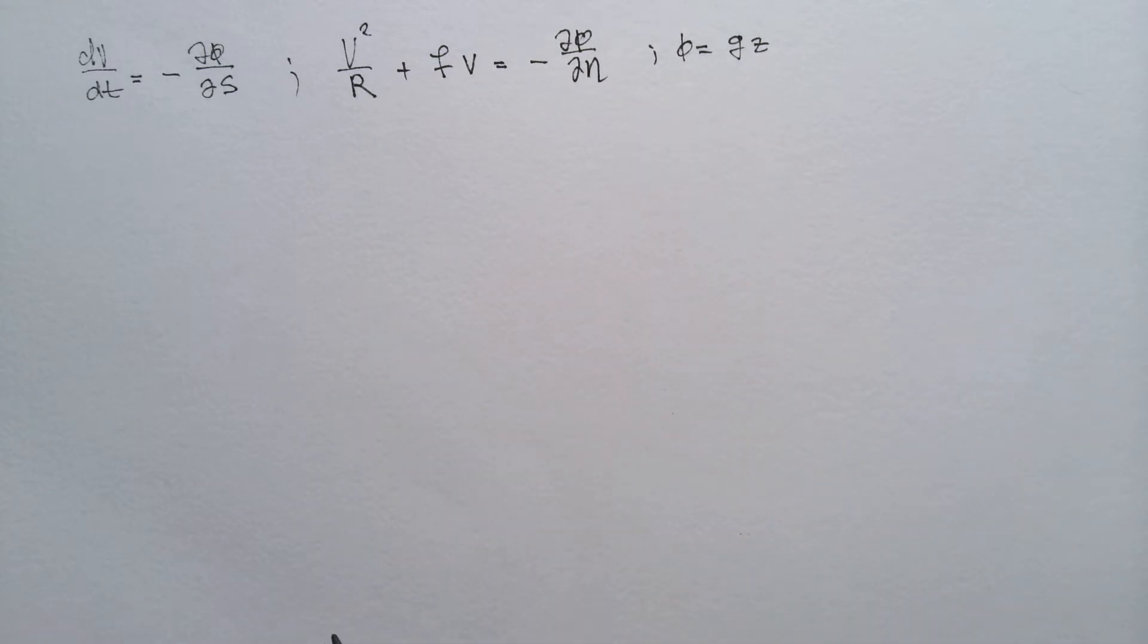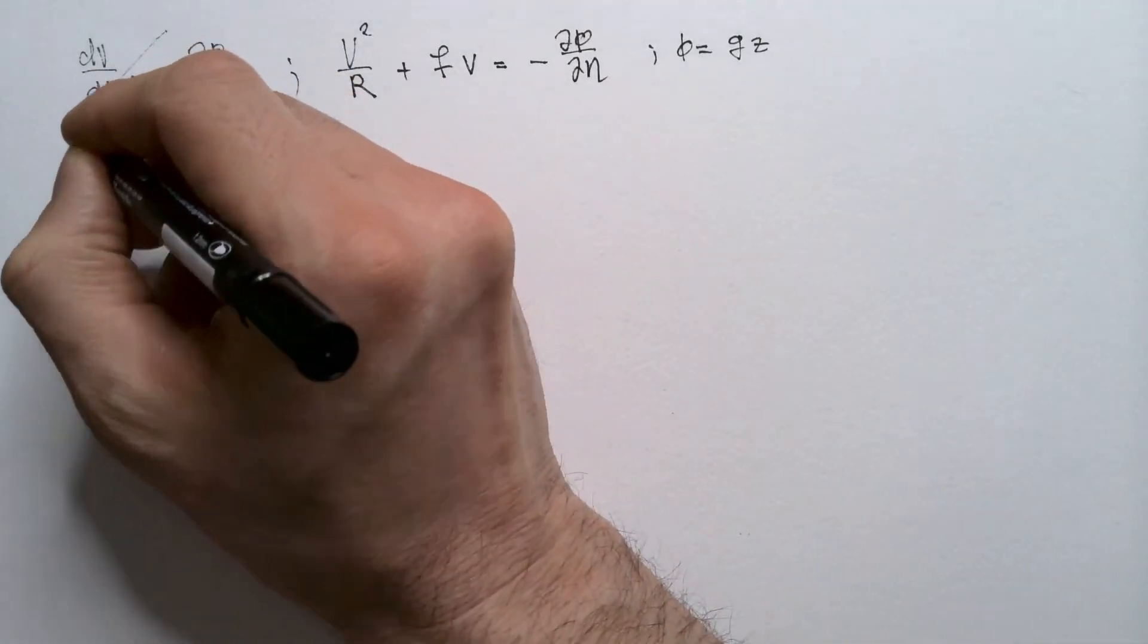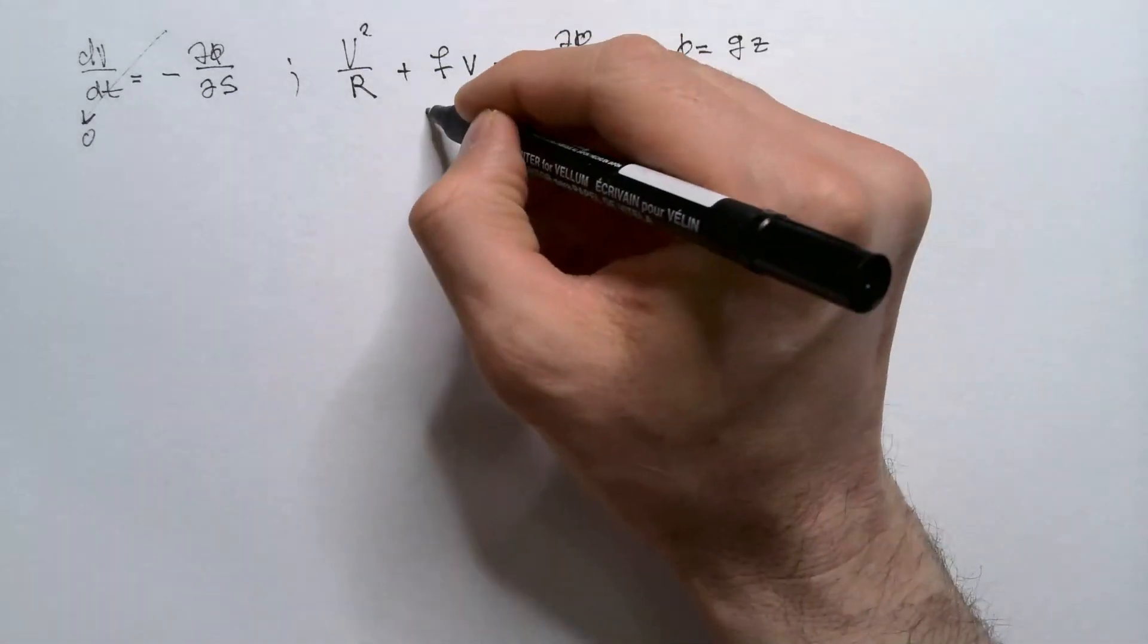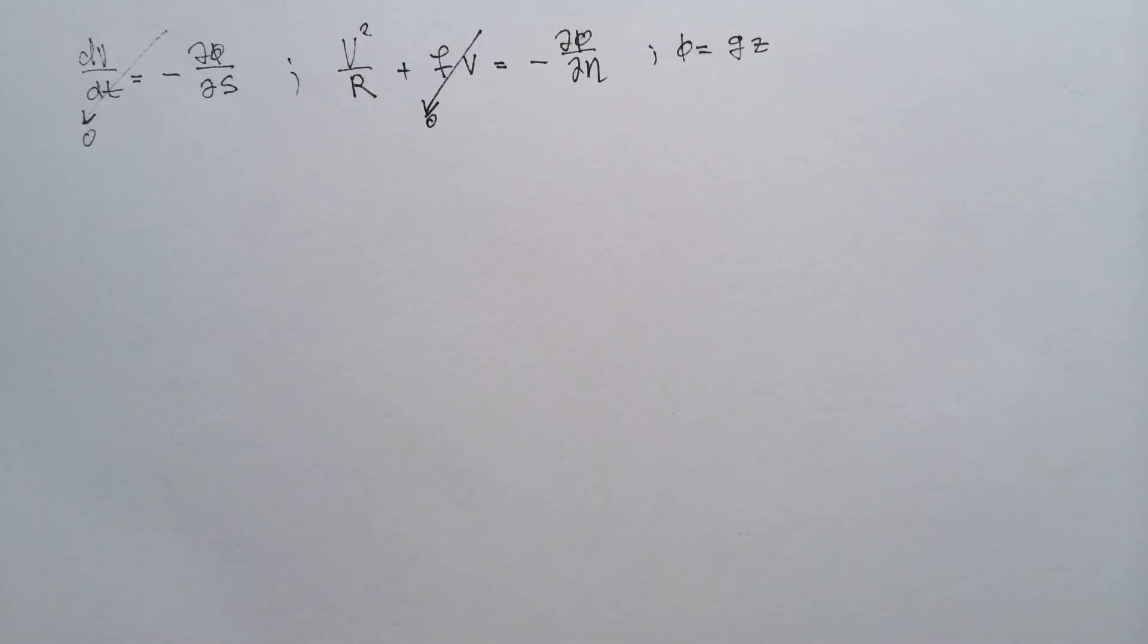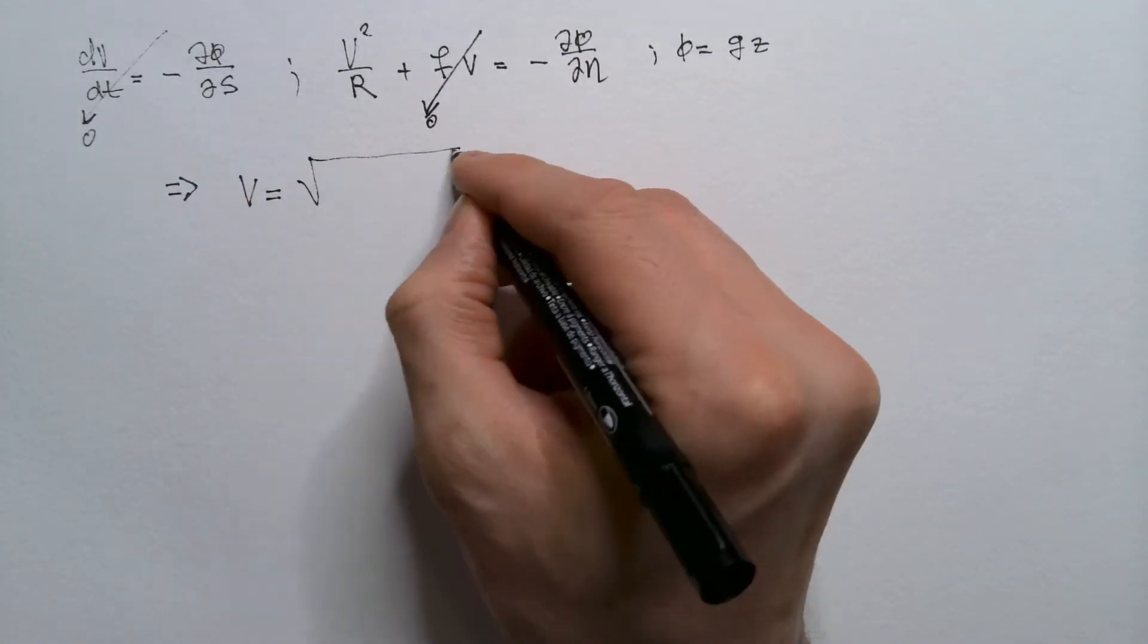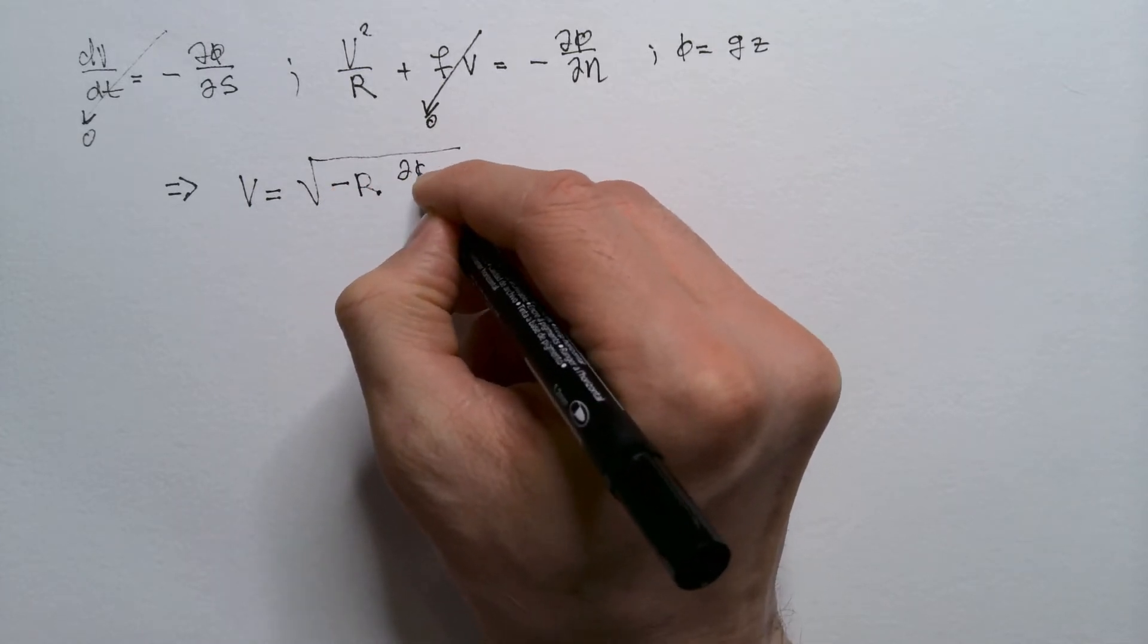So, cyclostrophic wind is a balance, which means there is no accelerations, which means this is zero, which means this equation doesn't exist. At the same time, we neglect the influence of Coriolis force, which means this term over here is zero, which means our motion is at really small horizontal scales. So, from this equation, we see that v is equal square root of minus R delta phi delta N.